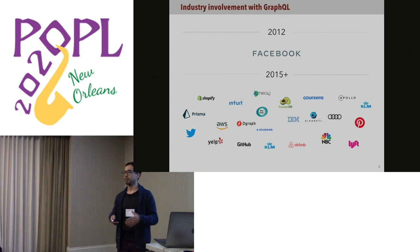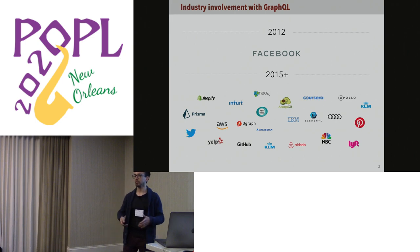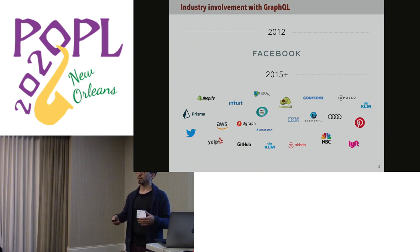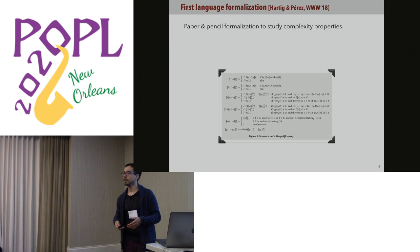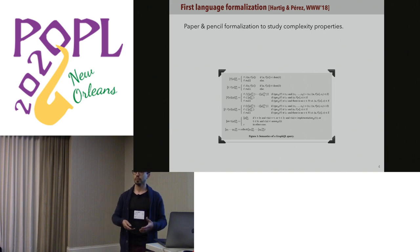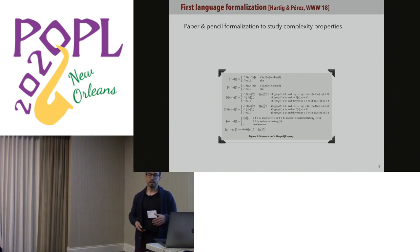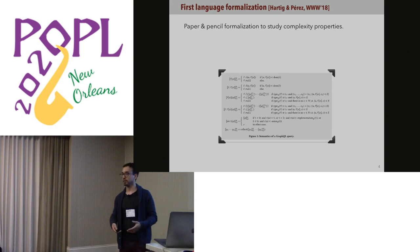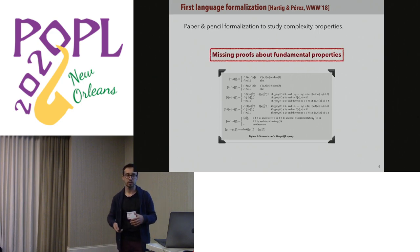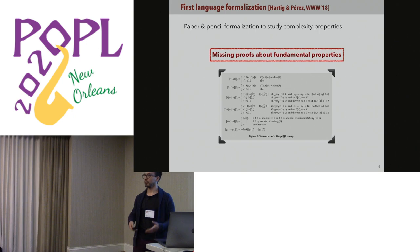The thing that happens is that the specification is written in natural language, which we know is prone to inconsistencies, ambiguities, etc. To address this issue, Hartig and Perez formalized the language semantics. They wanted to study complexity properties of this language, and they formalized the semantics and got some nice complexity results and boundaries. However, these results were based on some properties, and they didn't provide the proofs of these properties and fundamental statements about them.